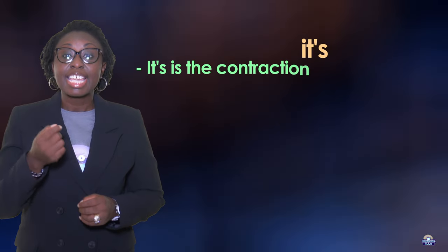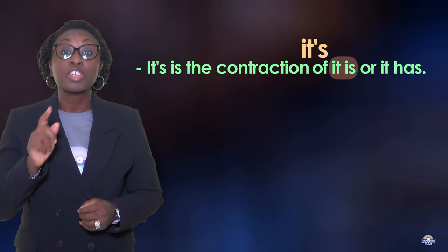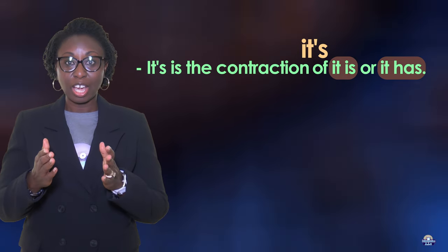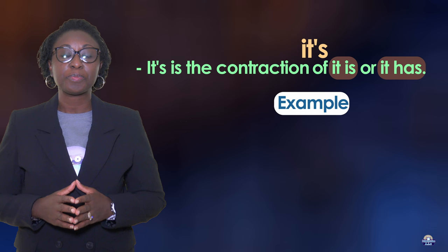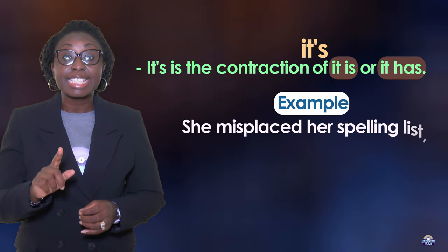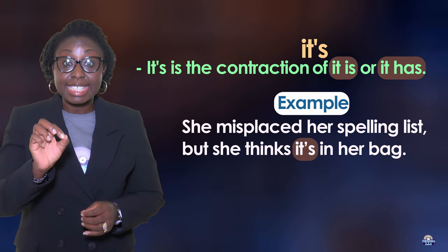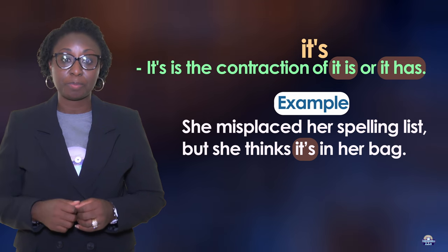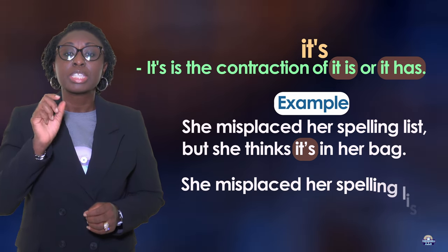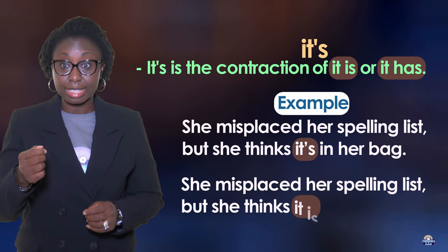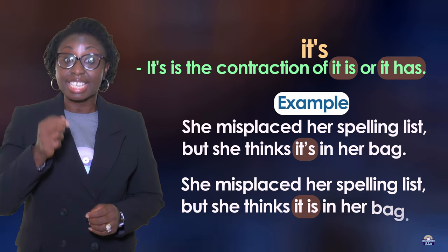Now let's look at 'it's' — I-T-apostrophe-S. 'It's' is the contraction of 'it is' or 'it has'. For example: she misplaced her spelling list but she thinks it's in her bag. If we write out 'it's' fully: she misplaced her spelling list but she thinks it is in her bag.